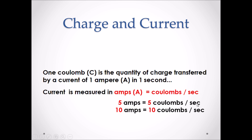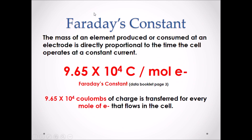The actual units of current are coulombs per second. This is a conversion ratio, just like grams per mole — if we have coulombs we can convert to seconds, and if we have seconds we can convert to coulombs. Faraday's constant: the mass of an element produced or consumed at an electrode is directly proportional to the time the cell operates at a constant current. Faraday's constant is 9.65 × 10⁴ coulombs per one mole of electrons — this value can be found in the Chemistry 30 data booklet on page three.